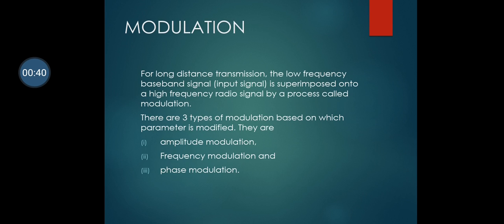Modulation means the low frequency baseband signal is superimposed onto a high frequency radio signal. This process is called modulation. There are three types of modulation: amplitude modulation, frequency modulation, and phase modulation.